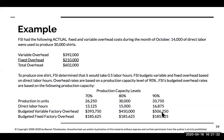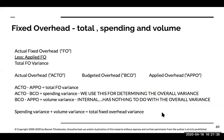Overhead rates are based on a production capacity level of 90%. This is very important — how FSI budgets its fixed factory overhead is based on that 90% production capacity. We need to figure out the applied fixed overhead, which we do not yet know.